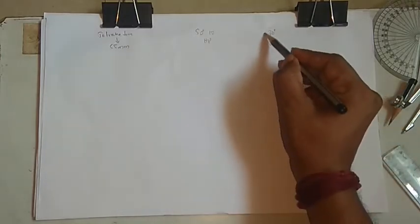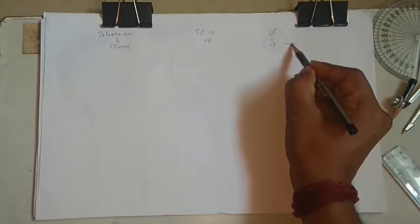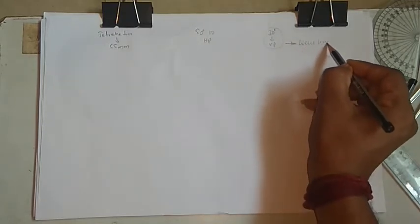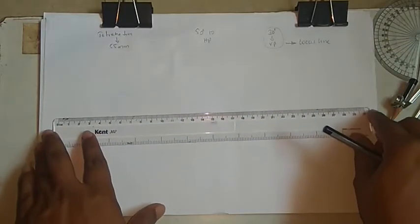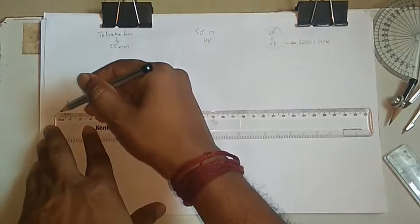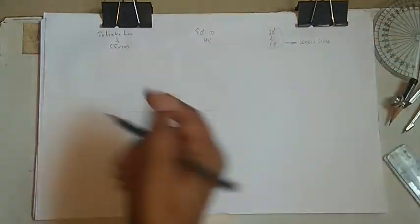This is a typical problem where, unlike a prism or pyramid where we take the axis inclined as a beta line, here we get the edge inclined. So we need to go with the locus line problem. We'll take one reference line and see one approach.